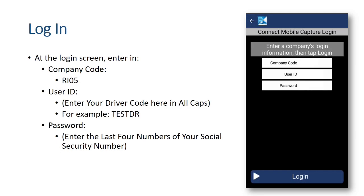At the login screen, enter the company code, which is RI05. Then your user ID, which is your driver code in all caps — the example used is TESTDR. Then your password, which is the last four numbers of your social security number.